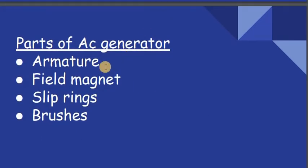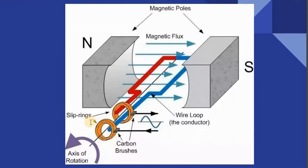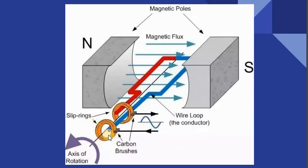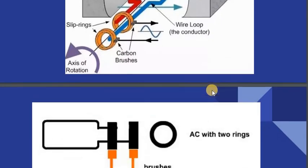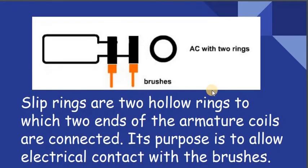The parts of the generator are: armature, field magnet, slip rings, and brushes. The slip rings are two hollow rings to which the two ends of the armature coil are connected. Their purpose is to allow electrical contact with the brushes.